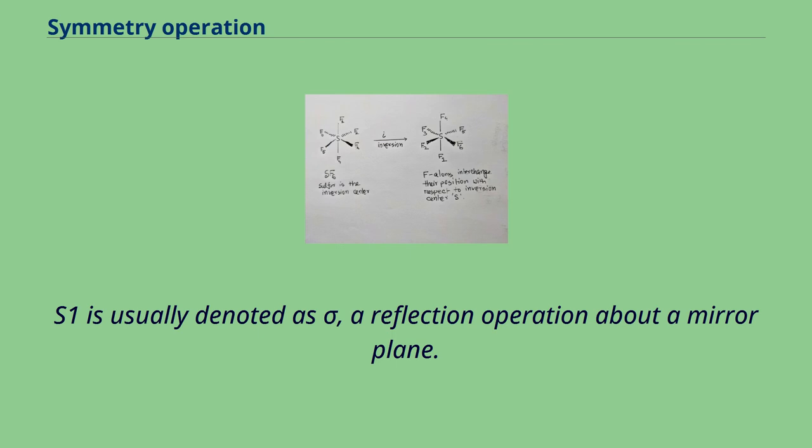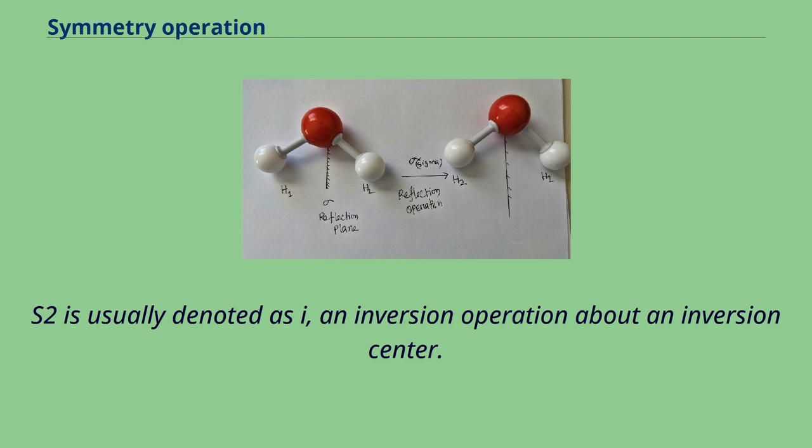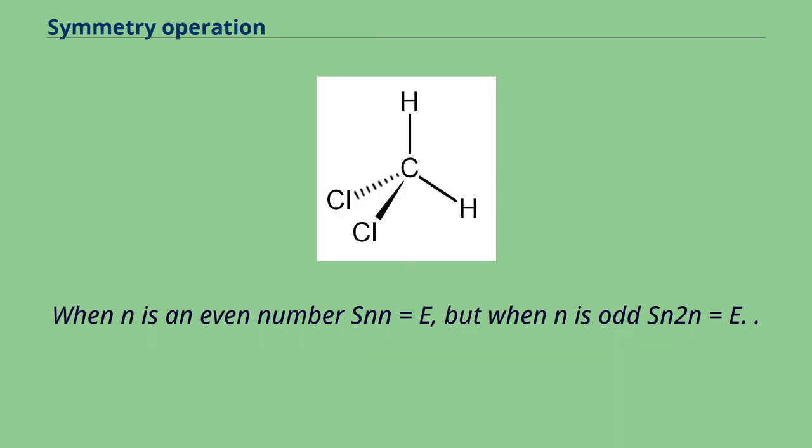S1 is usually denoted as sigma, a reflection operation about a mirror plane. S2 is usually denoted as I, an inversion operation about an inversion center. When n is an even number Sn^n equals E, but when n is odd Sn^2n equals E.